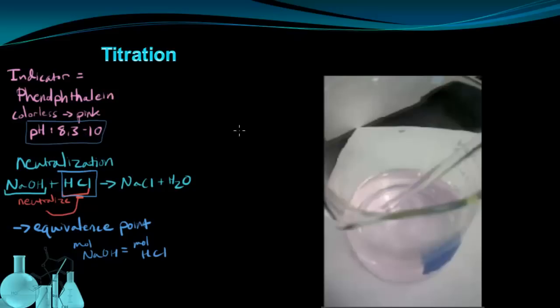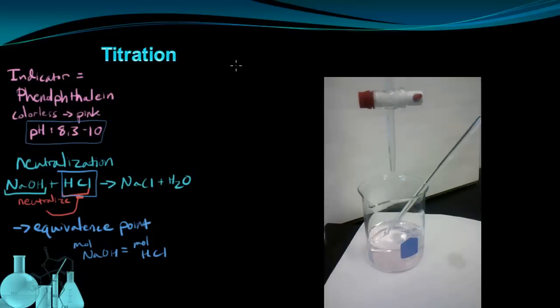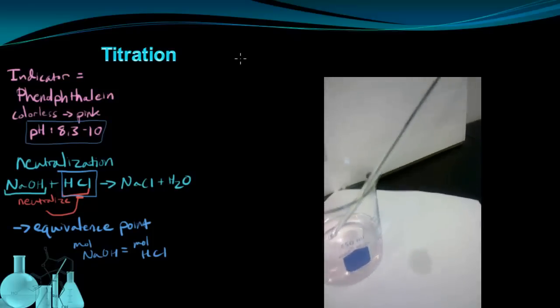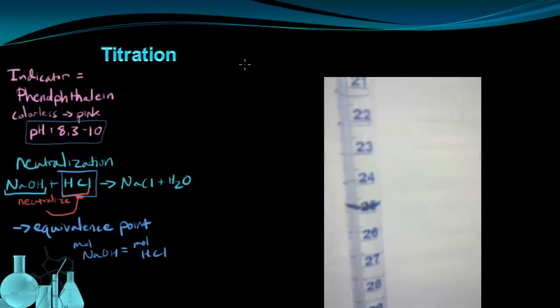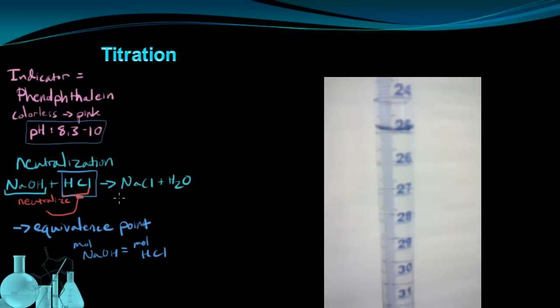So this color change that we've reached, this end point of the titration, is basically us guessing at where this equivalence point occurs. And the key piece of information we're trying to get from this is the volume of NaOH added from the burette to reach this end point. That's the whole purpose of running this. We're trying to figure out how much NaOH was needed to completely neutralize the unknown HCl.